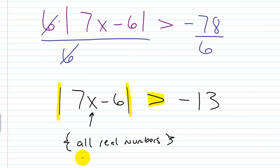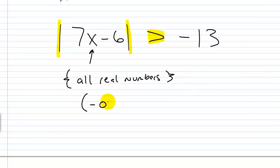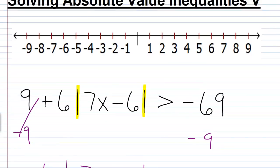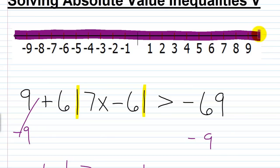In interval notation, I could write it like this. Or graphically, I could shade the entire number line — shade the arrows in and shade this entire thing here. Basically, you just need to know that no matter what number you pick and plug in for x, you'll get a true statement.